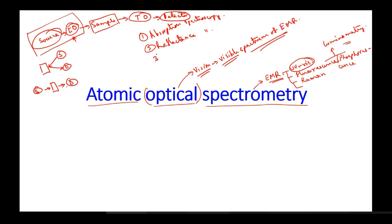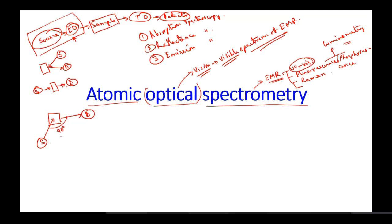The third case is emission spectroscopy, which includes fluorescence and phosphorescence. In emission spectroscopy, you have the sample, the light source, and the detector which are at 90 degrees apart.